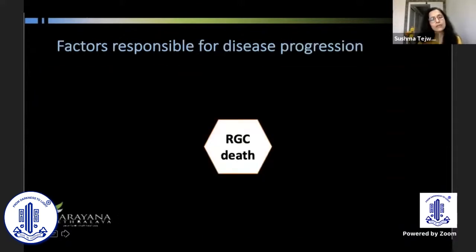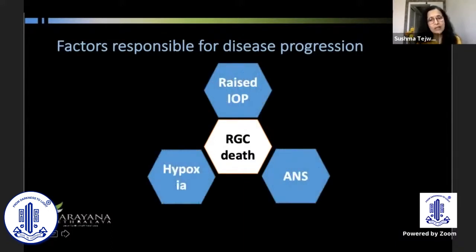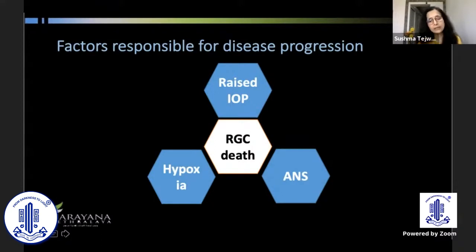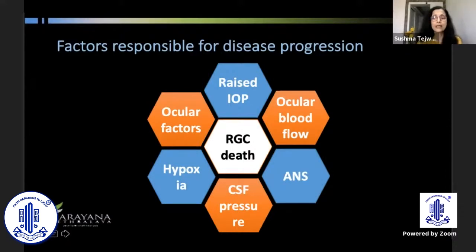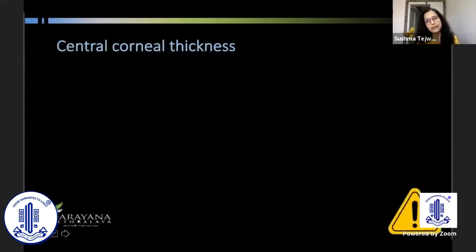What we are looking at is how RGC death happens in glaucoma so that it compromises visual function. The primary cause is raised intraocular pressure, then there is hypoxia, imbalance of the autonomic sympathetic system, certain ocular factors, blood flow to the optic nerve, and also CSF pressure which contributes.